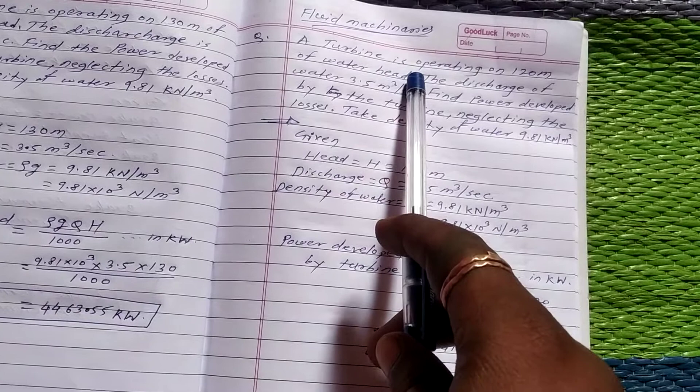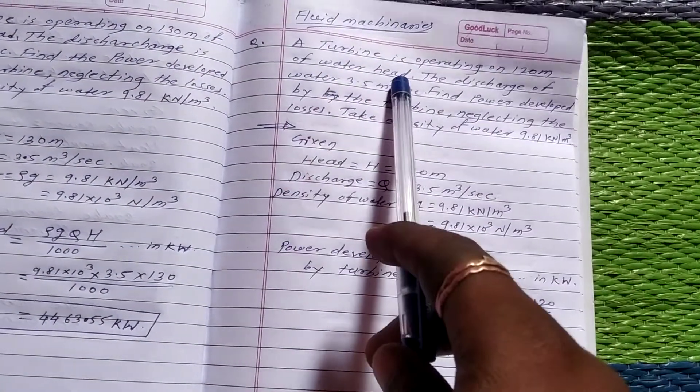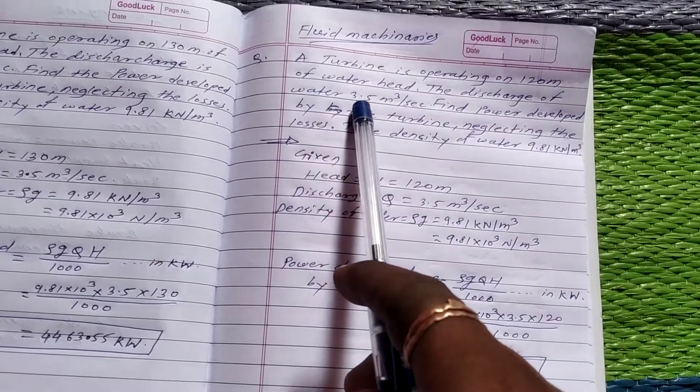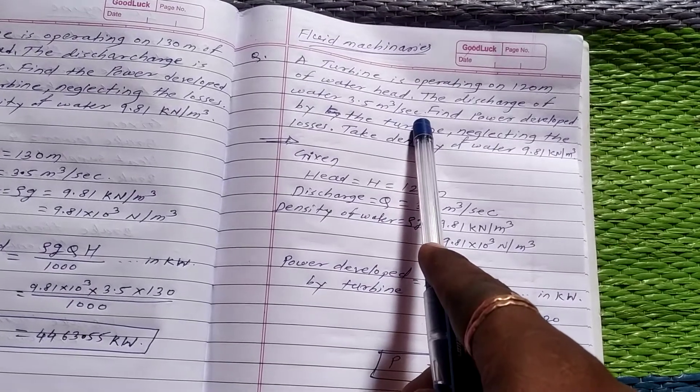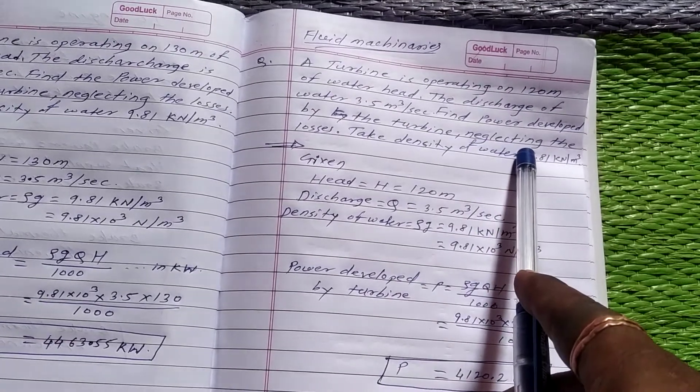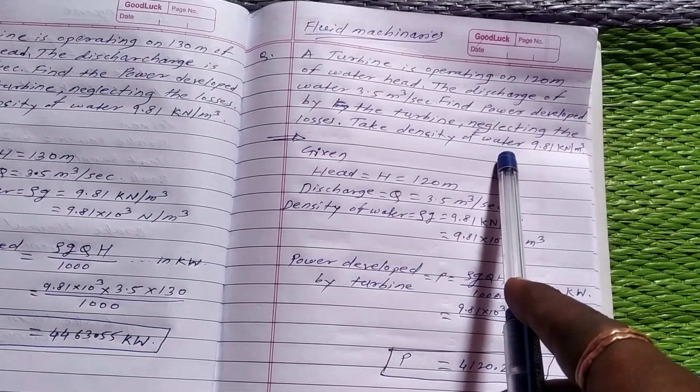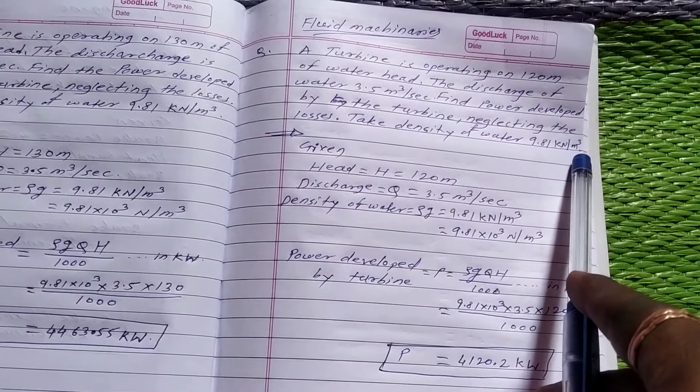A turbine is operating on 120 meter of water head. The discharge of water 3.5 meter cube per second. Find power developed by the turbine, neglecting the losses. Take the density of water 9.81 kN per meter cube.